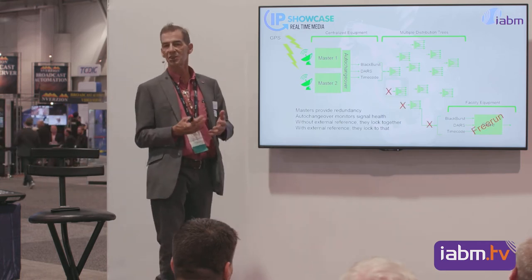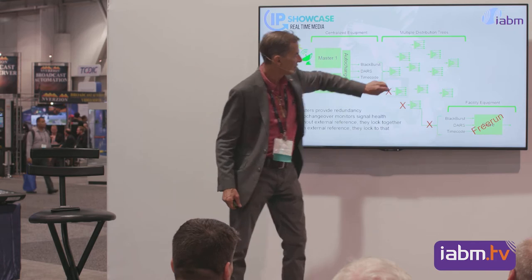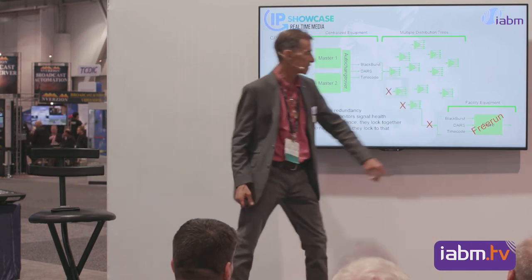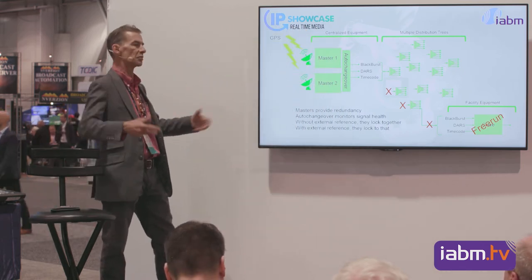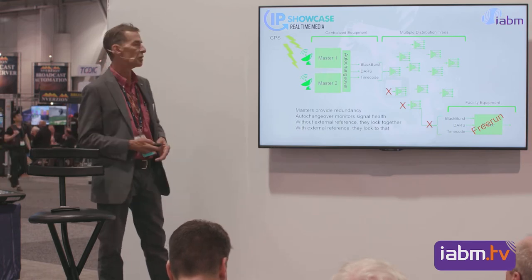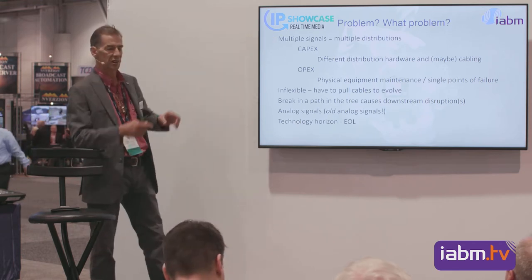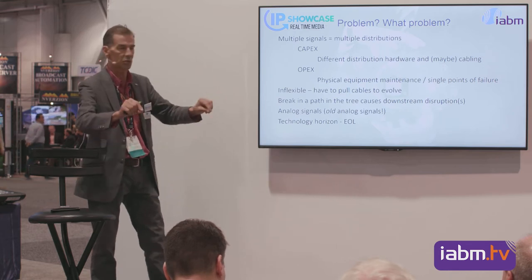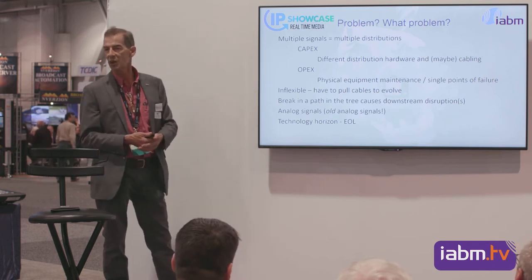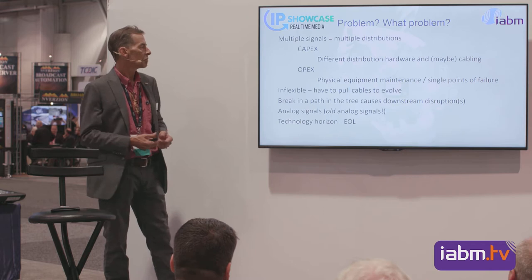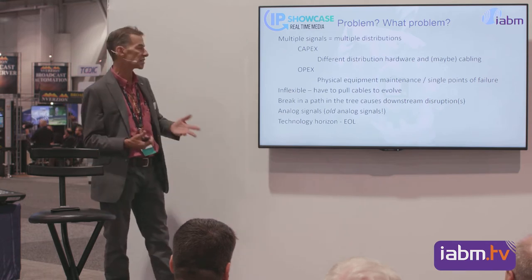But there's a problem with these distribution trees. If you step on the cable in the closet on the fifth floor and break that link, everything downstream loses reference. The facility free-runs. Now you've got a free-running device feeding your main system — things go bad. Multiple signals means multiple distributions: you don't just have one DA frame; you have one for timecode, one for video, and so on. There's CapEx associated with this, you have to locate it somewhere, maintain it, and it's a single point of failure, so you have to protect it.